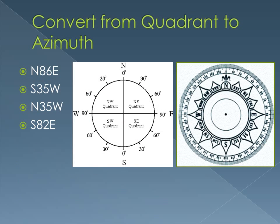Now we'll convert from quadrant to azimuth. Starting with north 86 east — that's about right there. That's easy: it's just 86 degrees on the azimuth.